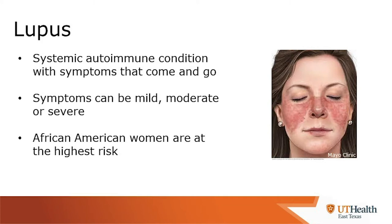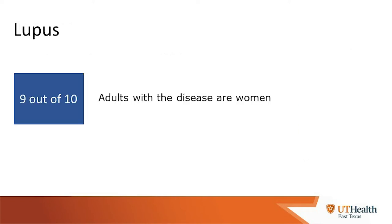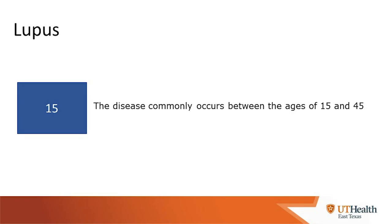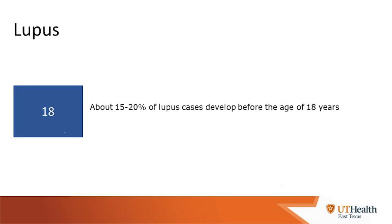Next, we're going to talk about lupus. Lupus is a systemic autoimmune condition with symptoms that come and go. These symptoms can be mild, moderate, or severe, and African-American females are the highest at risk. Nine out of ten patients with lupus are female. The disease commonly occurs between ages 15 and 45, and about 15 to 20 percent of lupus cases develop before the age of 18, so we do see lupus in the pediatric population.